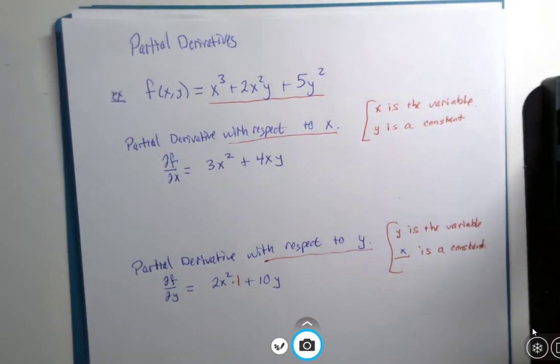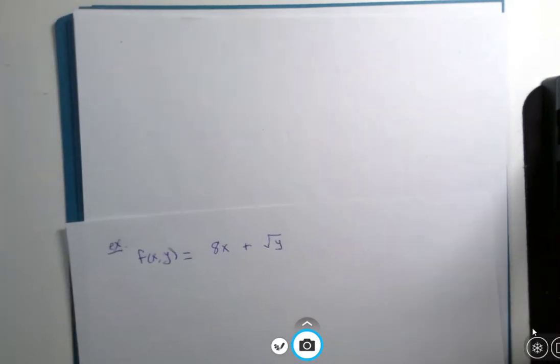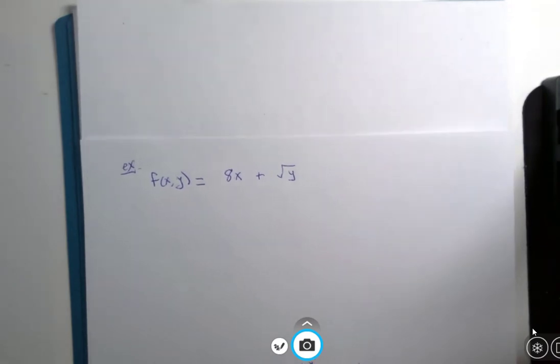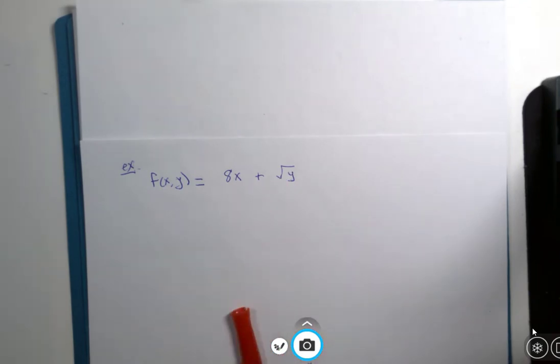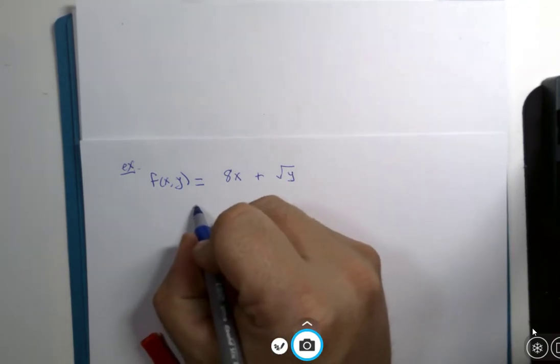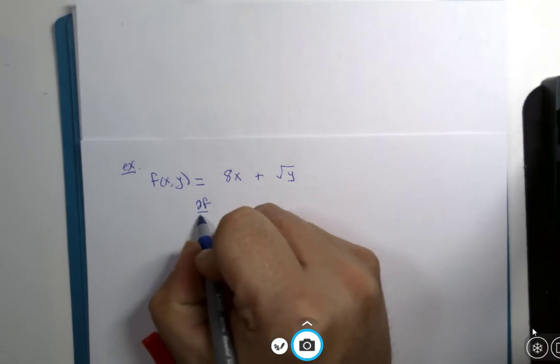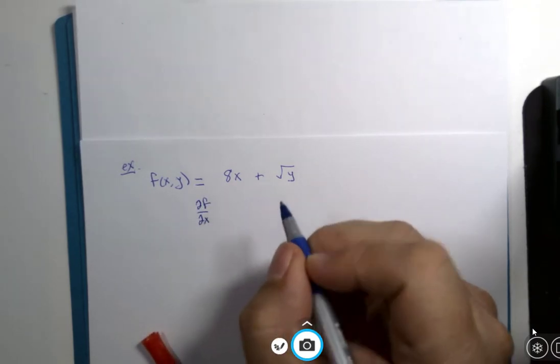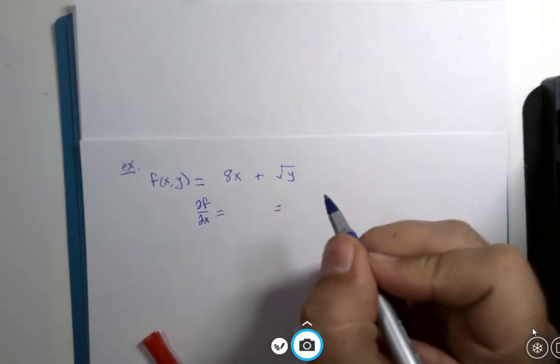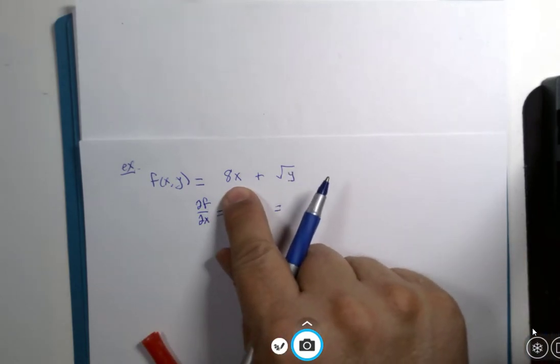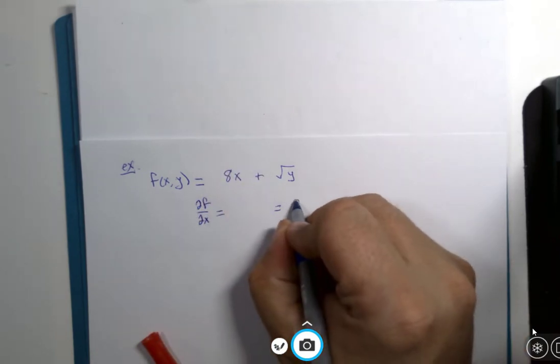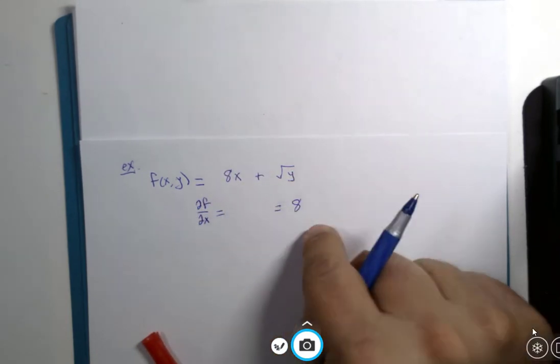Let's do some simple examples based on this information. So if f(x,y) = 8x + √y and you are asked to find the partial derivative with respect to x, you treat x as the variable and you treat y as a constant. So the derivative of 8x is 8, and the derivative of a constant is 0.